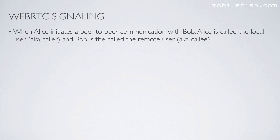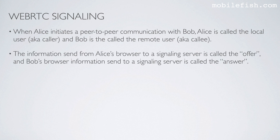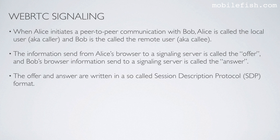When Alice initiates a peer-to-peer communication with Bob, Alice is called the local user, aka caller, and Bob is called the remote user, aka callee. The information sent from Alice's browser to a signaling server is called the offer, and Bob's browser information sent to a signaling server is called the answer. The offer and answer are written in a so-called Session Description Protocol format.